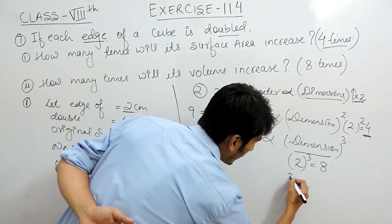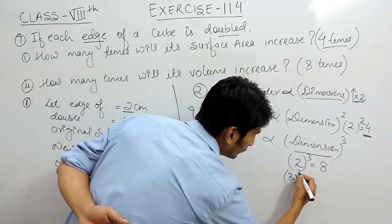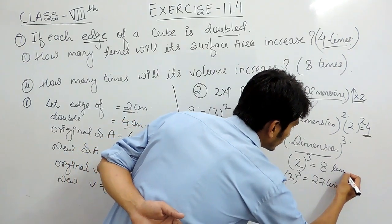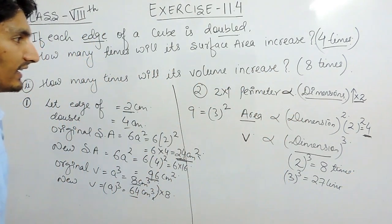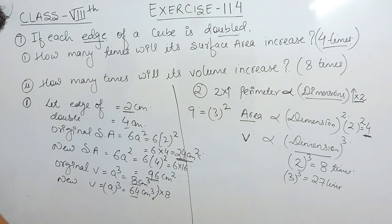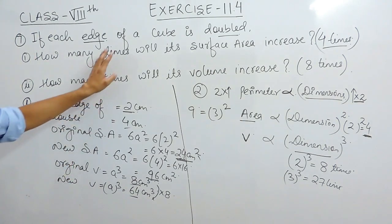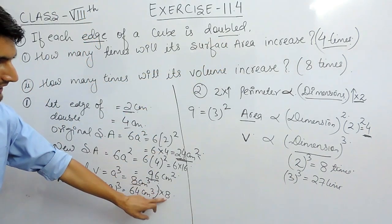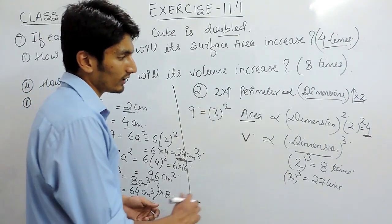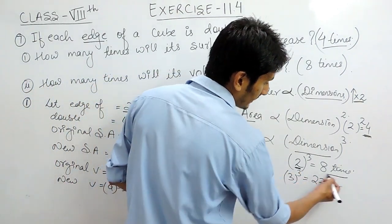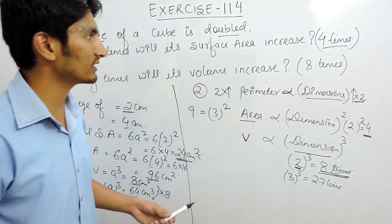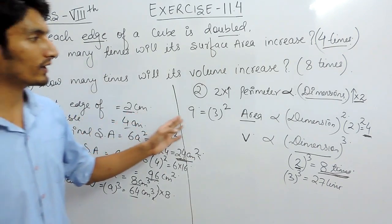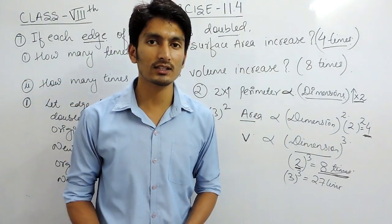If dimensions are increased three times, the volume will increase 27 times. So this is how we can find the relation between these three terms. Because the dimensions are doubled, our volume increases eight times. You can solve this question either by assuming a number or by remembering these proportionality relations — both methods work.